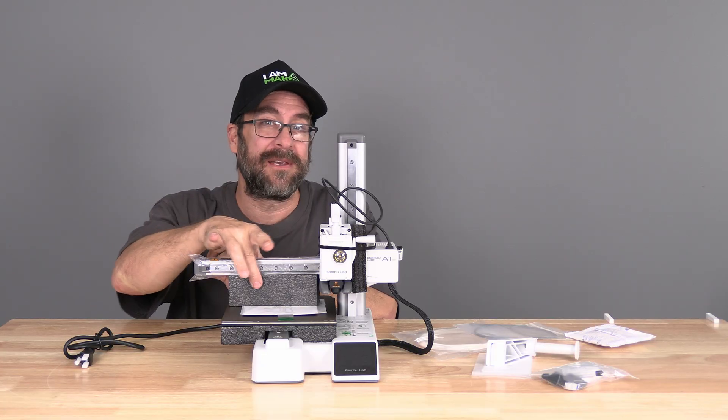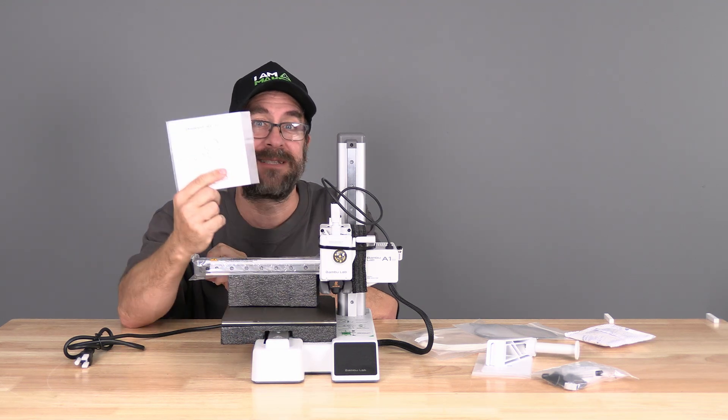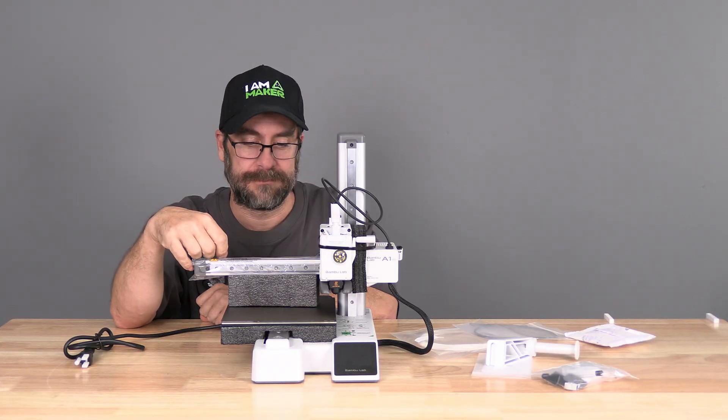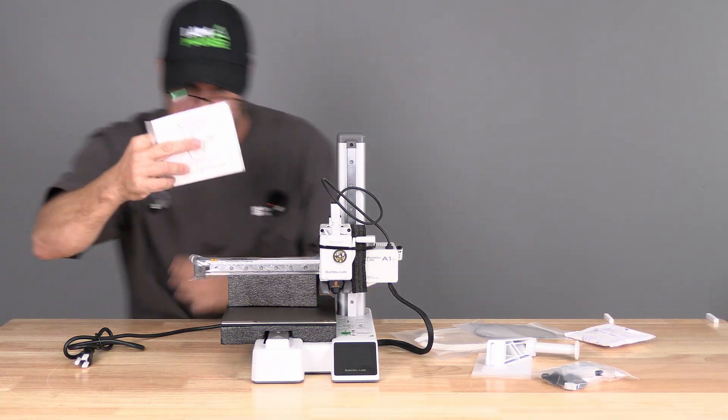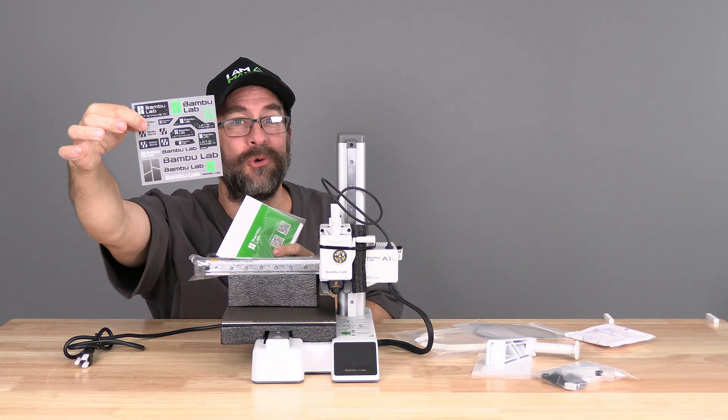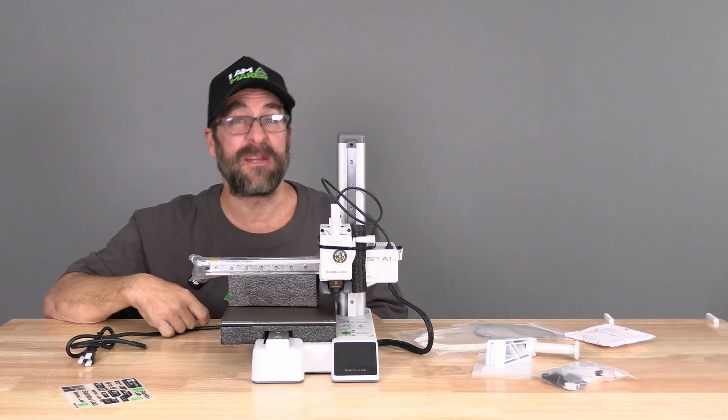Wedged underneath additional foam and the print bed is this quick start guide. You can slide it out. You won't be needing this because you've got me. Just kidding. Bambu has begun including some really cool stickers with their quick start guides. You're going to want those. Then you get rid of the manual.